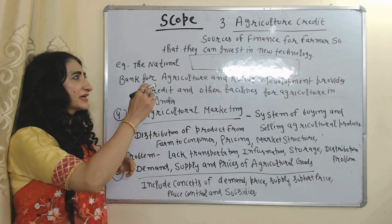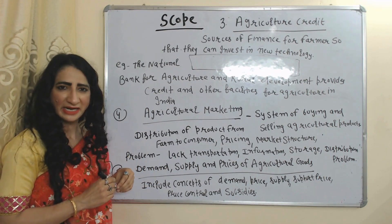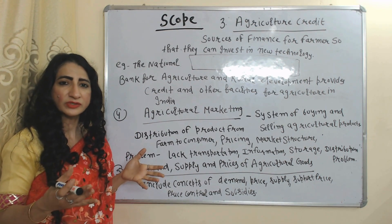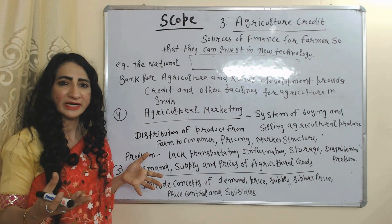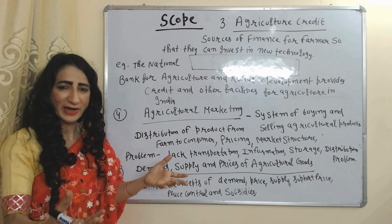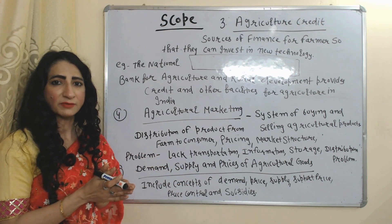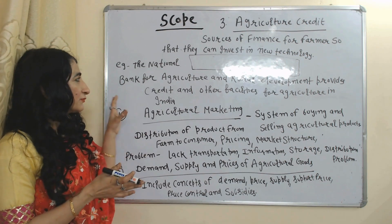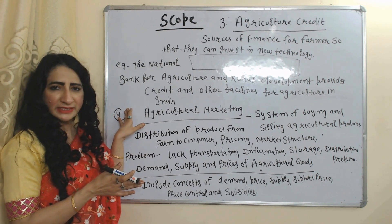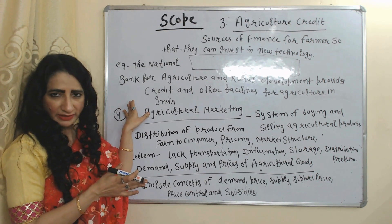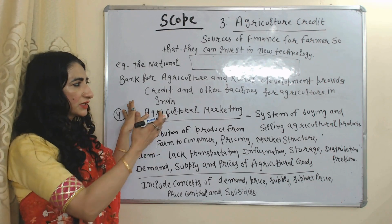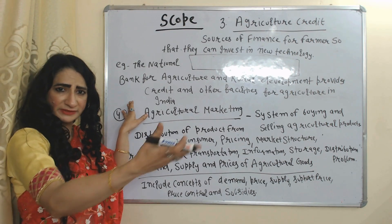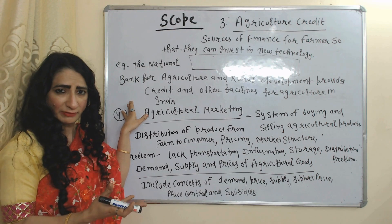The next scope is agricultural credit. Agricultural economics studies the sources of finance for farmers so that they can invest in modern technology. For example, in India, the National Bank for Agriculture and Rural Development (NABARD) provides credit and other facilities to farmers for agricultural purposes.